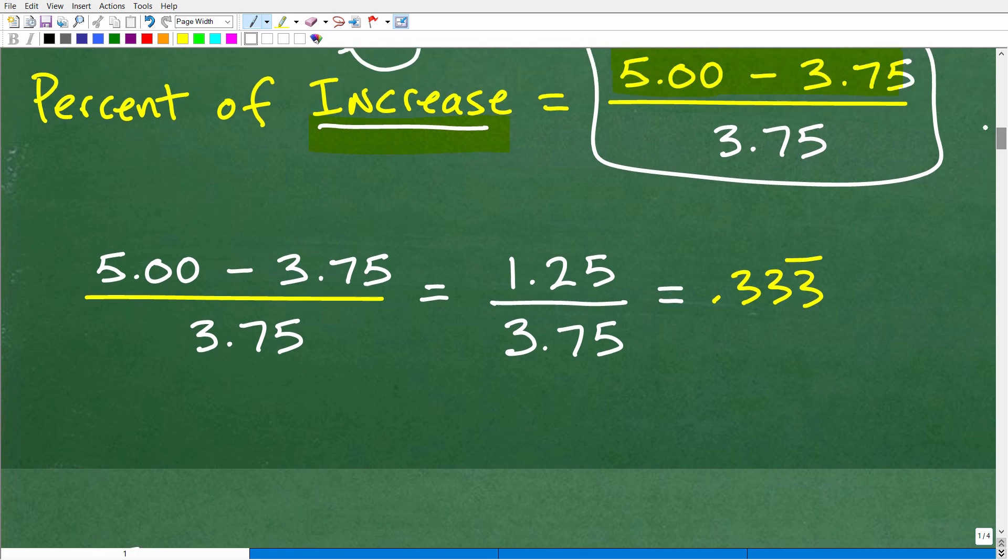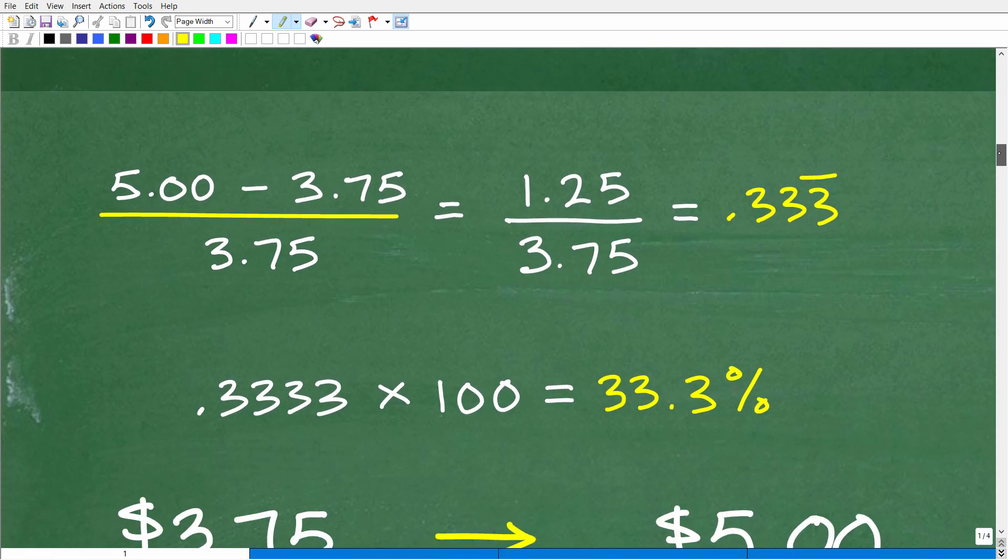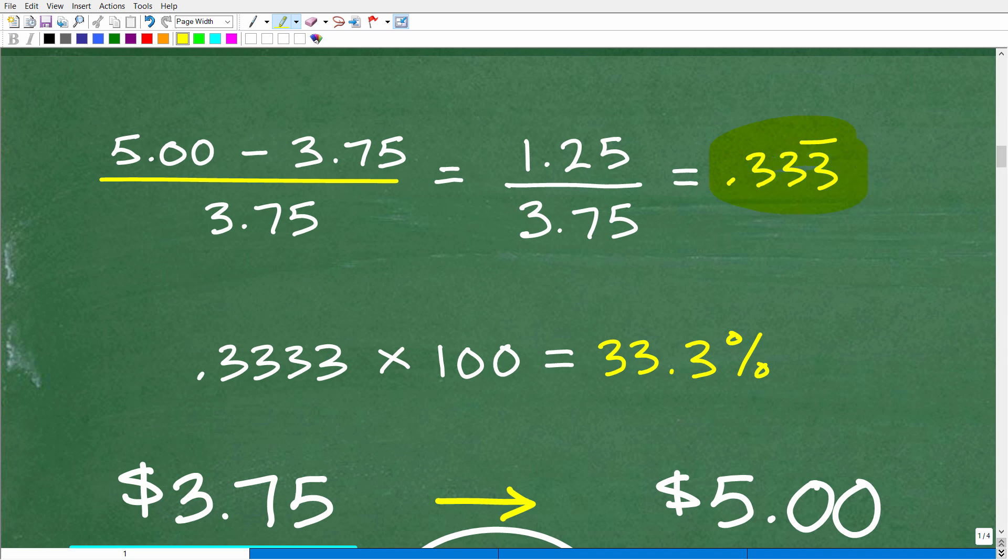This is not that difficult. By the way, always feel free to use a calculator when you're doing this stuff. So we have $5 minus $3.75. That's $1.25. That's going to be divided by $3.75. When we use our calculator, you're going to get 0.3 repeating or 0.333. The 3s go on and on and on. So what we have here is a decimal.